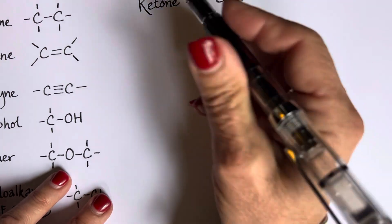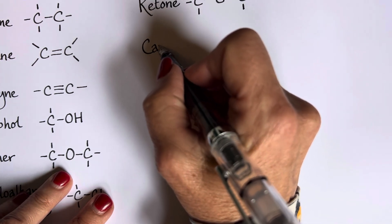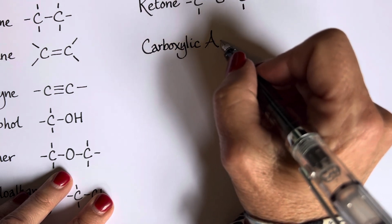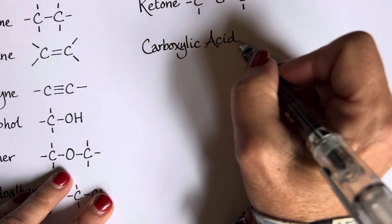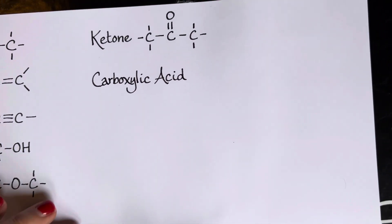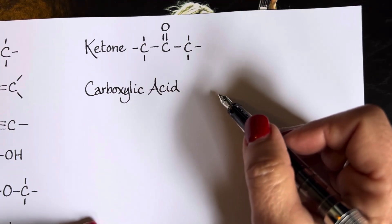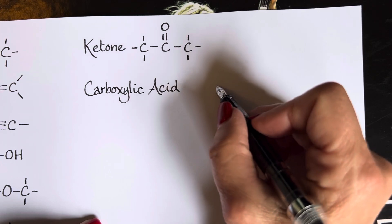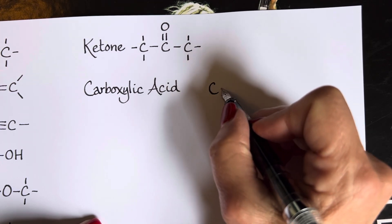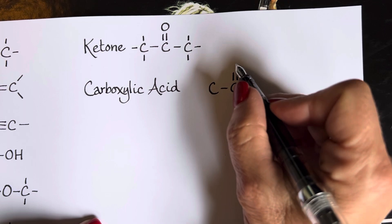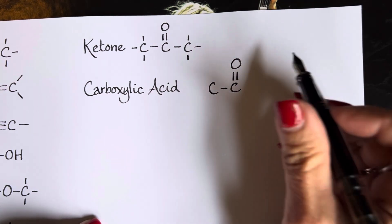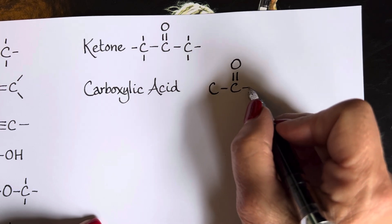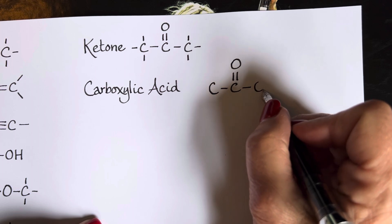Next, let's look at carboxylic acid. So what we have now is a kind of combination. We've got C double bond O, which we've seen in an aldehyde and a ketone. And then it is also bonded to an OH group.